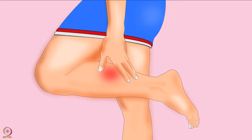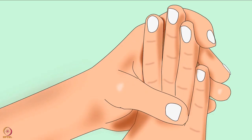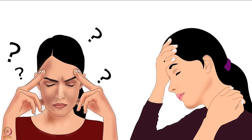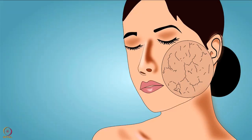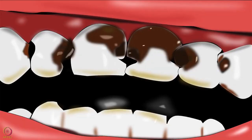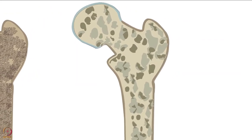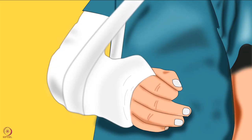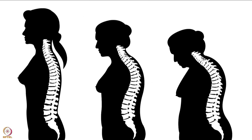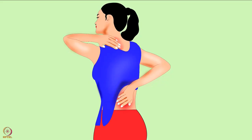In adults, early signs of calcium deficiency include muscle cramps, numbness or tingling sensation of fingers, mental confusion, irritability, dry skin, brittle nails, and tooth decay. Long-term deficiency of calcium can result in osteoporosis, where bone density is reduced. The bones become fragile and prone to fractures, and other symptoms include stooped posture, loss of height, and back pain.